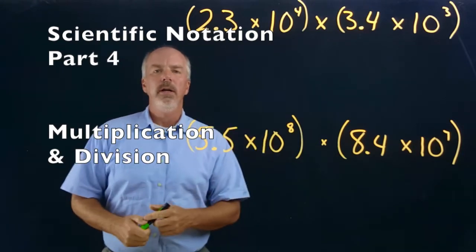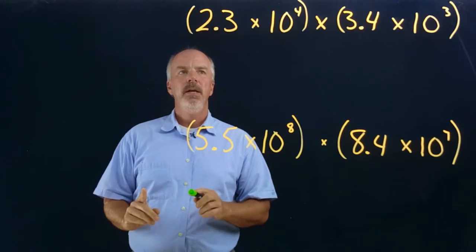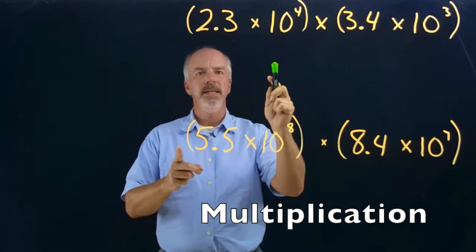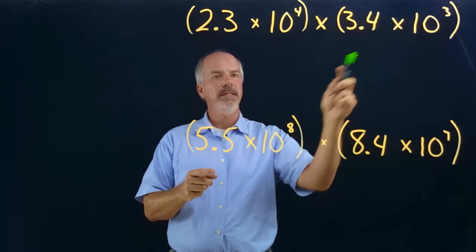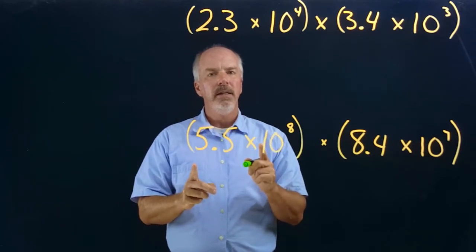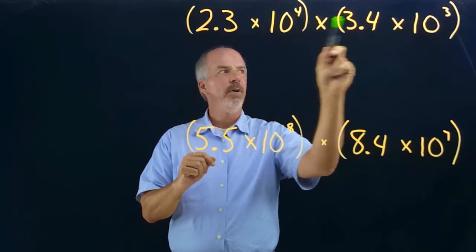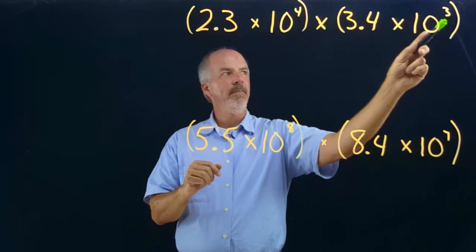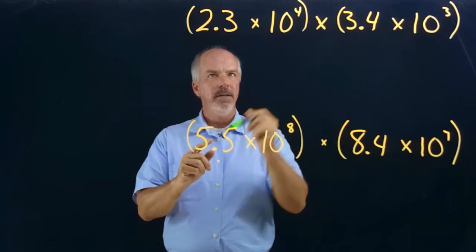Okay, hey — Part 4 of scientific notation. This is on multiplication and division. We have 2.3 times 10 to the fourth times 3.4 times 10 to the third, both written in scientific notation. In multiplication and division, unlike addition and subtraction, we're not concerned about the powers of 10 being the same. In addition and subtraction we needed the powers to be the same, but in multiplication that's not necessary.